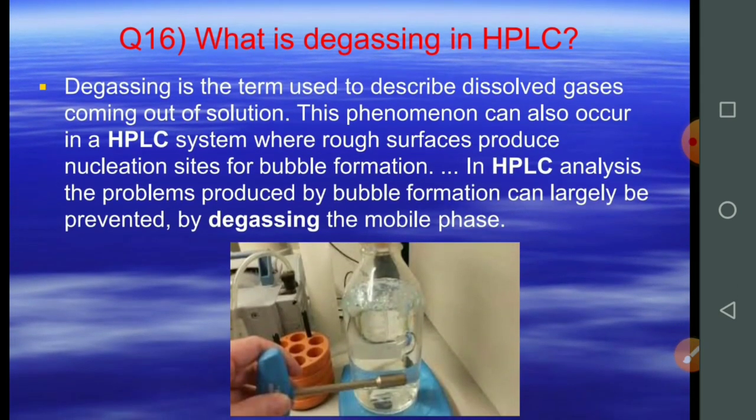Question number sixteen: what is degassing in HPLC? Degassing is the term used to describe dissolved gases coming out of solution. This phenomenon can also occur in HPLC systems when rough surfaces produce nucleation sites for bubble formation. In HPLC analysis, the problems produced by bubble formation can largely be prevented by degassing the mobile phase.